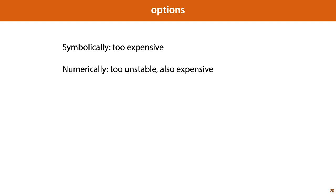An alternative approach is to forget the symbolic form of the function entirely and to just estimate the gradient for a specific input x. We could, for instance, pick some points close to x and fit a hyperplane through the outputs. This is a pretty unstable business — it's quite difficult to be sure that the answer is accurate. It's also expensive: the more dimensions in your model space, the more points you need to sample, and each point requires you to recompute the model for a new input.